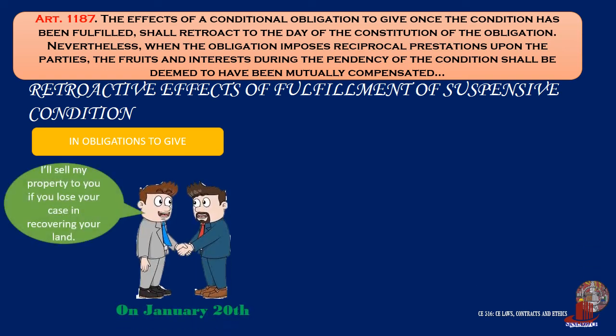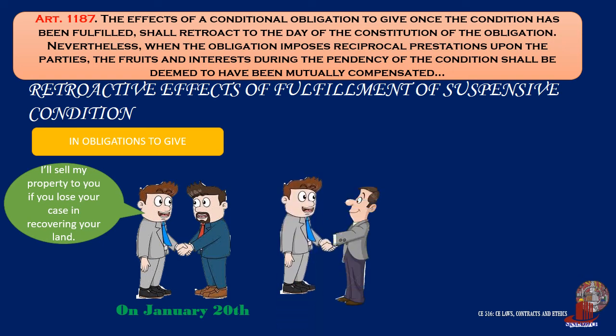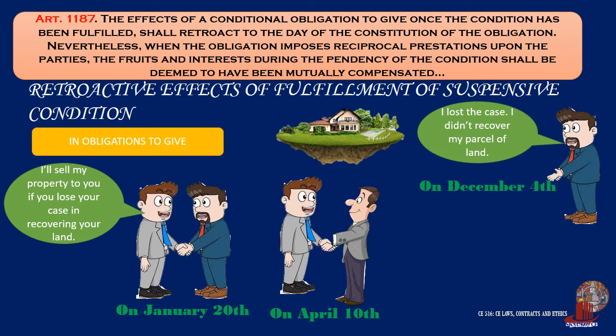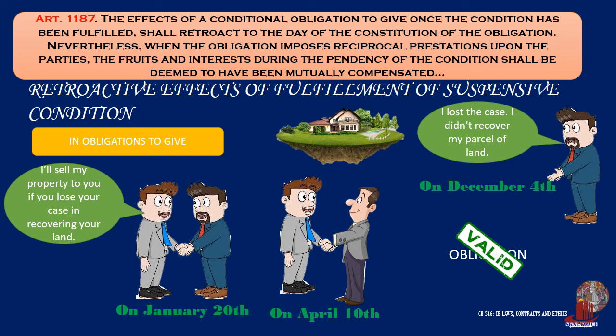Let's take this example. On January 20, Sean agreed to sell his parcel of land to Barry for an amount should Barry lose a case involving the recovery of another parcel of land. On April 10, Sean sold his land to Charlie. However, Barry lost the case on December 4. Before December 4, Barry had no right to demand the sale of the land by Sean. When the condition was fulfilled on December 4, it is as if Barry was entitled to the land beginning January 20. Hence, as between Barry and Charlie, Barry will have a better right over the land. It is required, however, under the property registration decree that the promise of Sean be annotated on the back of the certificate of title of the property to be binding against a third person like Charlie.